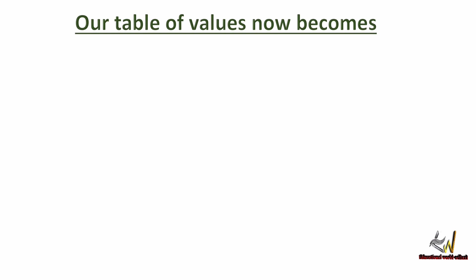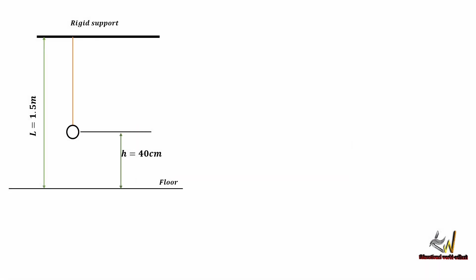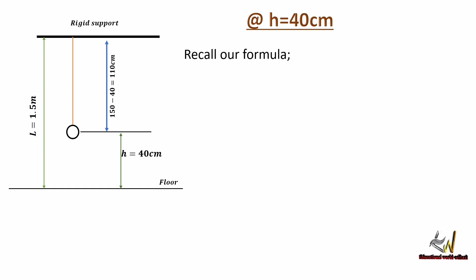Our table of values: when h = 20 cm, the time for 20 oscillations is 45.70 seconds, the period is 2.285 seconds, and the square of the period is 5.221 seconds squared. Moving over to h = 40 centimeters, the length of the thread is now 150 − 40 = 110 cm.